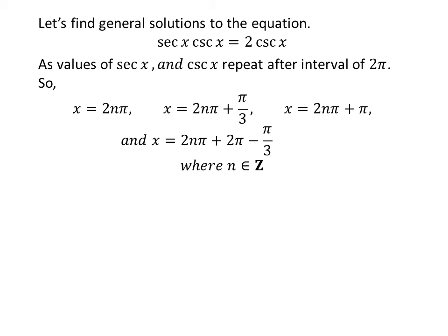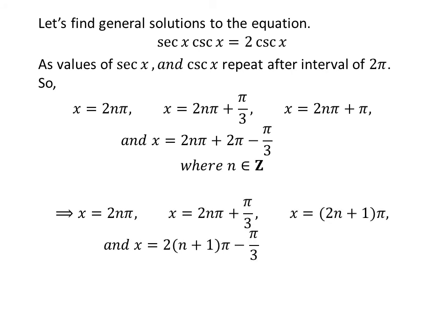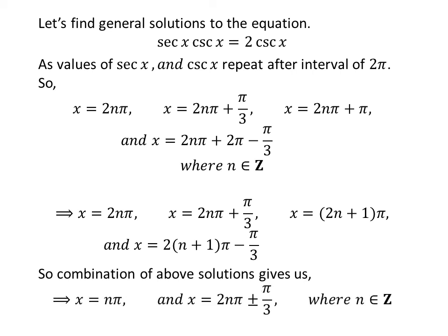Let us find the general solutions. Since secant of x and cosecant of x repeat after an interval of 2 times pi, the general solutions are: 2n times pi, 2n times pi plus pi upon 3, 2n times pi plus pi, and 2n times pi plus 2 times pi minus pi upon 3, where n is an integer. Further simplification gives: 2n times pi, 2n times pi plus pi upon 3, (2n+1) times pi, and (2n+1) times pi minus pi upon 3. Combining solutions: n times pi and 2n times pi plus or minus pi upon 3.